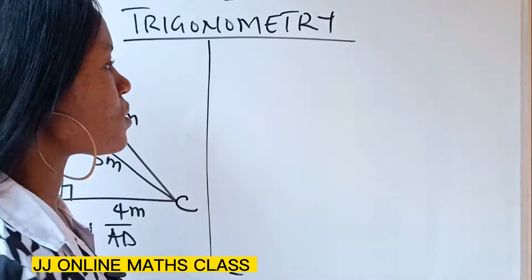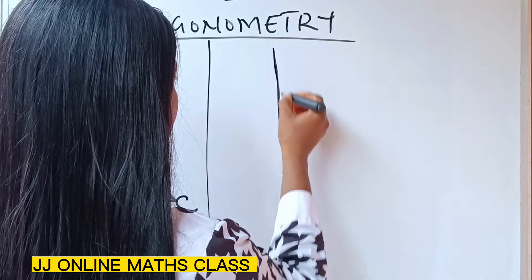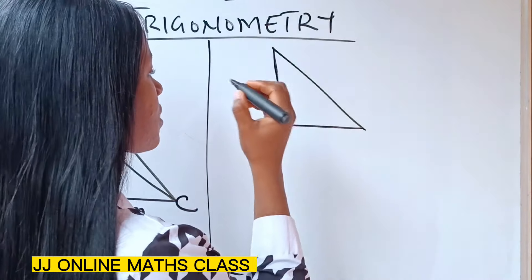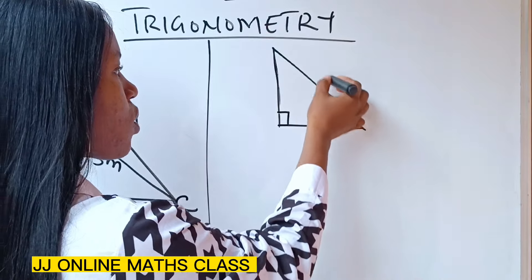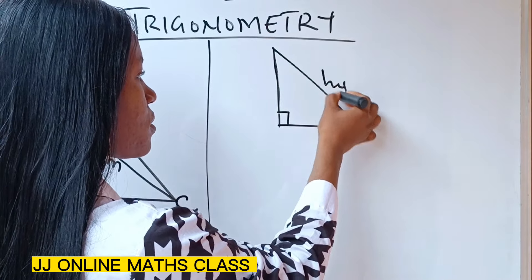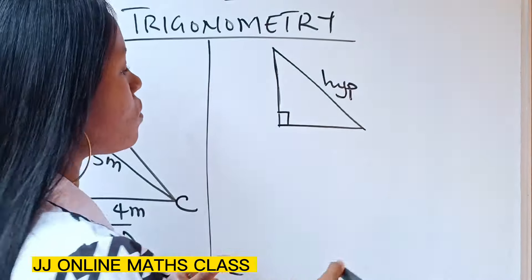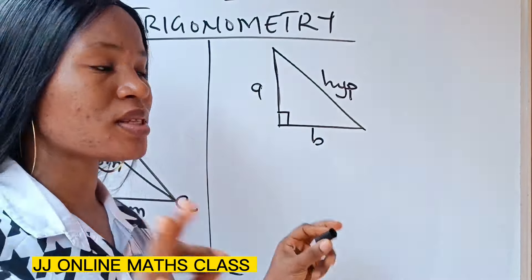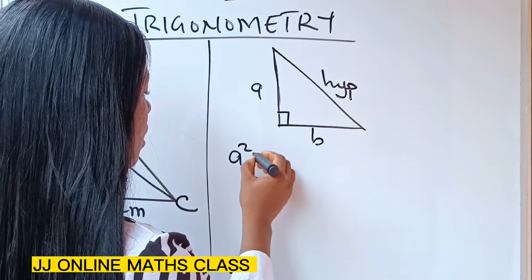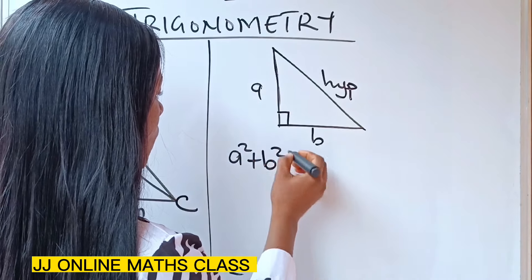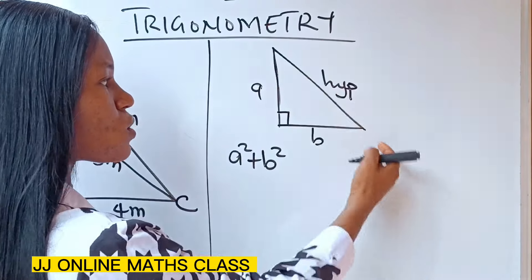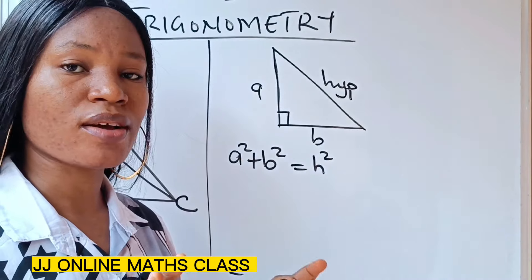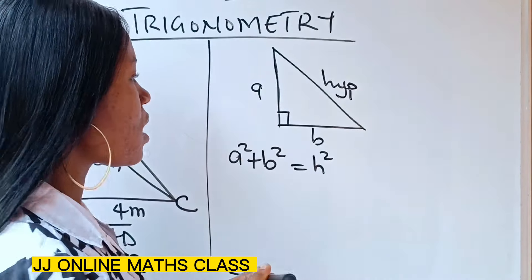The Pythagorean theorem states that if you have a right-angle triangle, the longest side is called the hypotenuse. If we call the remaining sides a and b, the theorem states that a squared plus b squared is equal to the hypotenuse squared. That is what the Pythagorean theorem states.